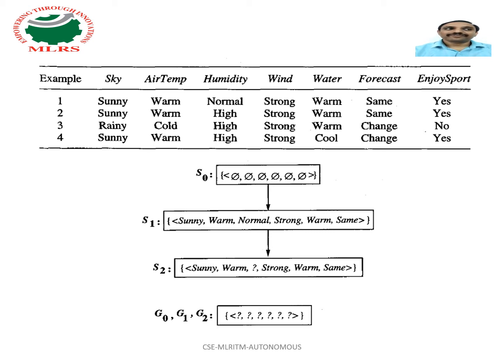For these attributes, our EnjoySport value is yes, that is the positive example. There is no update in the G boundary needed in response to the positive training example because G0 correctly covers this example.